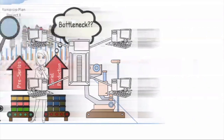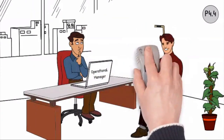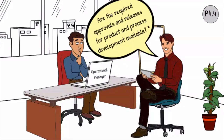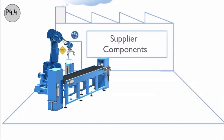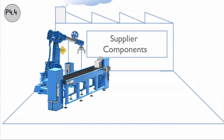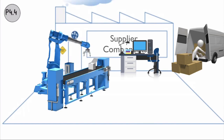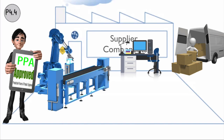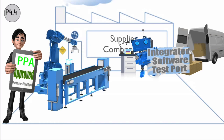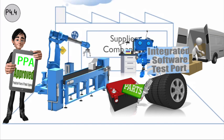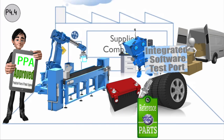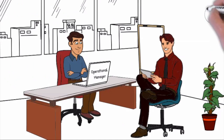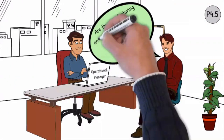Question P4.4: Are the required approvals and releases for product and process development available? The releases and verification of suitability are confirmed for all items, assemblies, software versions, and outsourced components and services in accordance with development schedules. The production process and product approval must be available at production release. For products with integrated software, an additional software test report is available. Reference parts from sampling must be kept for at least the time laid down in the customer requirements, and the material data is confirmed and released.